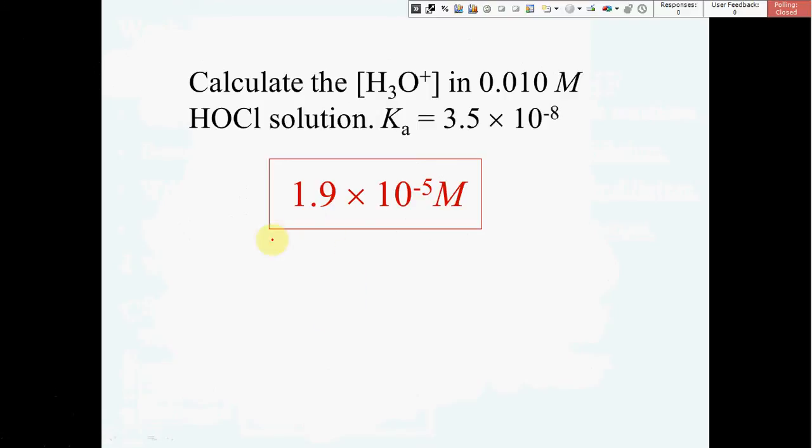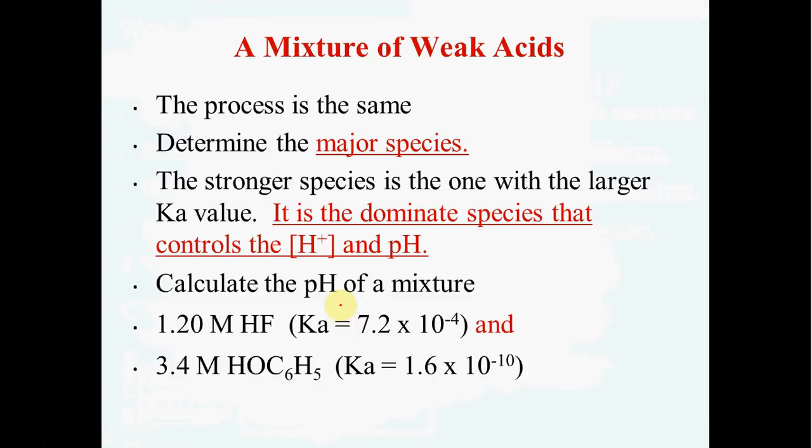Well, actually, sorry about that. They didn't ask you for the pH on this one. They only ask you for the hydronium ion concentration. Very common. We get used to solving for pH all the time. Go back and make sure that that's the value you had for the hydronium ion. And then if you wanted the pH, you would take the negative log of that value.